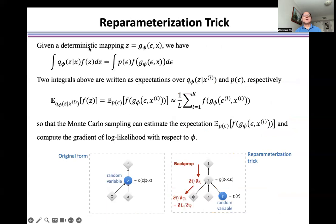Given the deterministic mapping z, we have this equation, namely, we can change this integral over z to integral over epsilon. That is a random value.